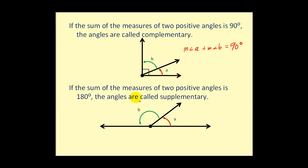Now if the sum of the measures of two positive angles is a hundred eighty degrees, the angles are called supplementary. So in this case, we would have the measure of angle A plus the measure of angle B equals one hundred eighty degrees.